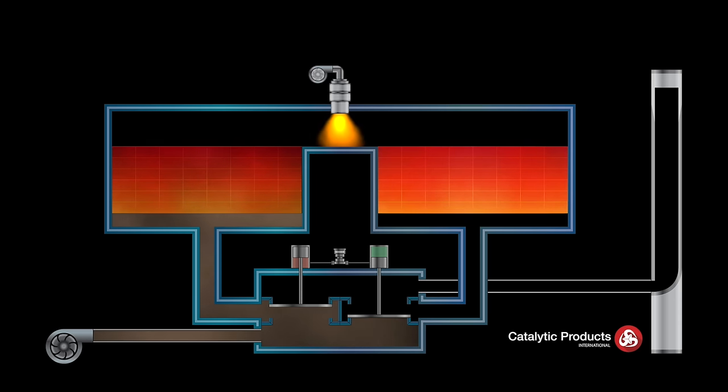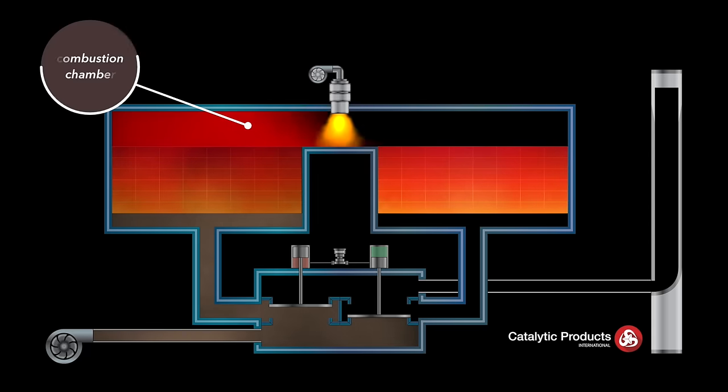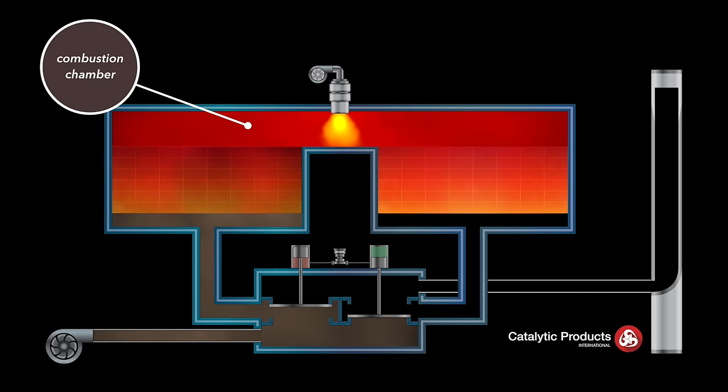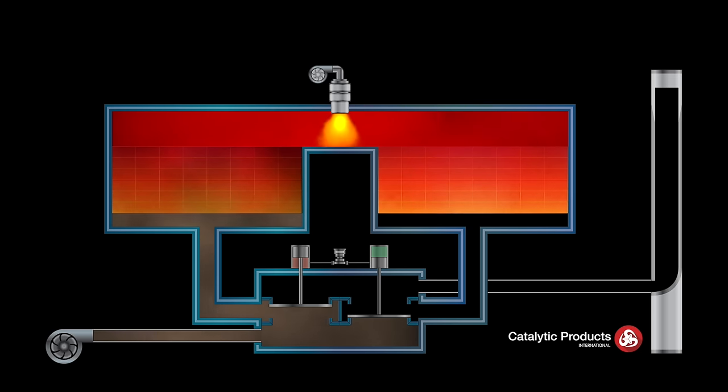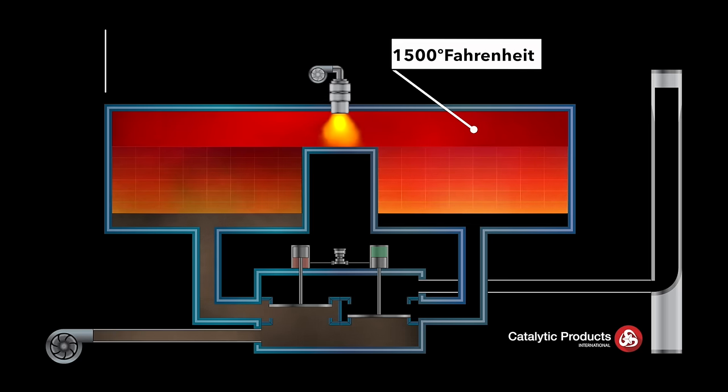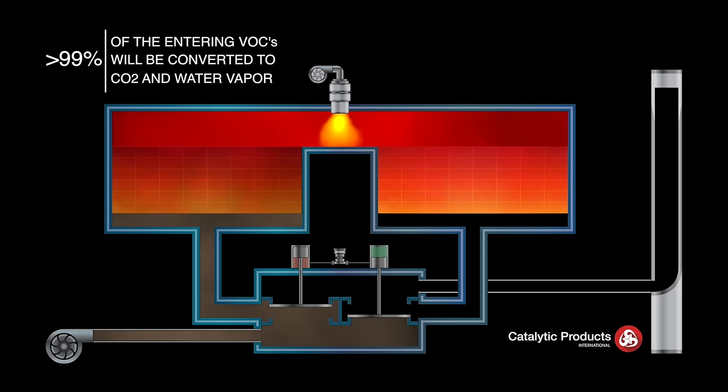The preheated process stream then enters the combustion chamber where the temperature will be raised to the set point where oxidation of the VOCs is completed, typically around 1500 degrees Fahrenheit. At this temperature greater than 99% of the entering VOCs will be converted to CO2 and water vapor.